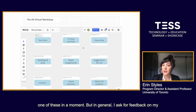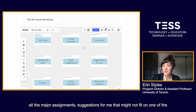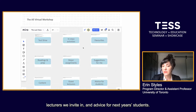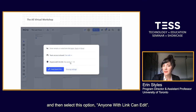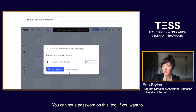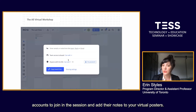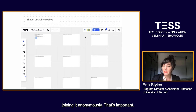In general, I ask for feedback on my class activities, class favorites, readings and class prep work, all the major assignments, suggestions for me that might not fit on another board, course content and organization in general, the guest lectures, and advice for next year's students. When you're ready to invite your class into the space, click on 'Share' and select 'Anyone with link can edit.' You can set a password on this too if you want. This share option means that your students don't need their own Miro accounts to join in and add their notes to your virtual posters, and when they enter the Miro poster room, they'll be joining anonymously. That's important.